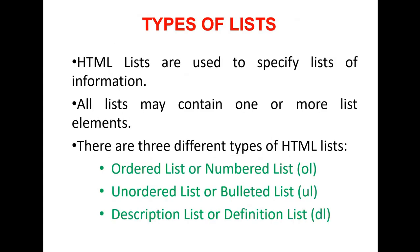Now we'll go to our topic: lists. The list tag is one of the tags used in HTML. It is used to specify a list of information. A list may contain one or more list elements. There are three types of list tags in HTML: ordered list (also known as number list), unordered list (also called bulleted list), and description list (also called definition list).